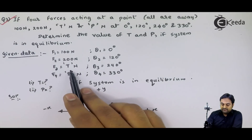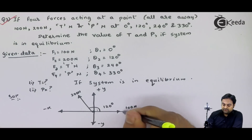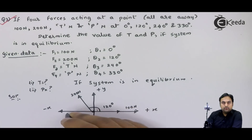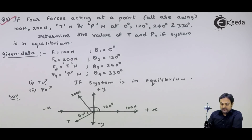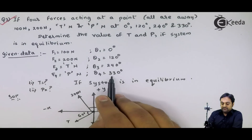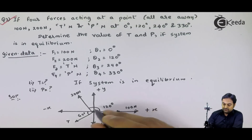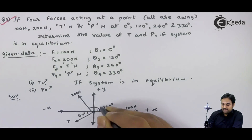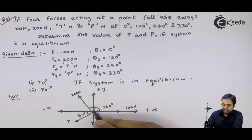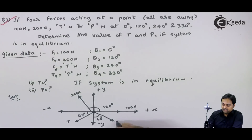F3 is T Newton acting at 240 degree. From plus x to minus x is 180 degree, and force T acts beyond that. F4 is force P at 330 degree. From plus x to minus x is 180, then minus x to minus y is 90, giving 270 degrees. Adding 60 more gives 330 degree — that is force P. So this is the complete diagram.